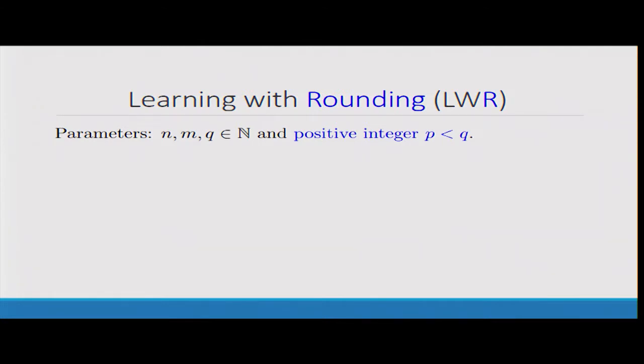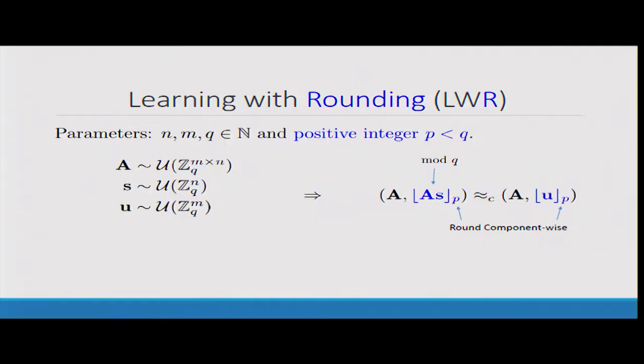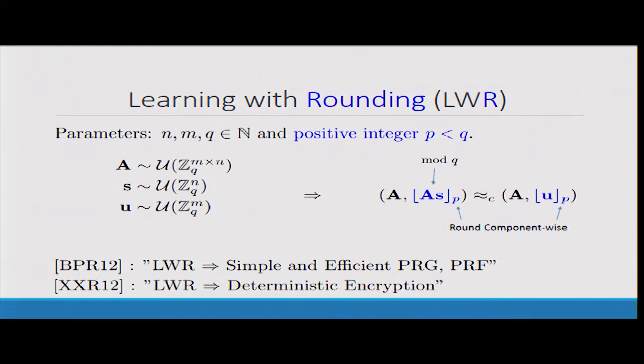Now we can formulate the learning with rounding assumption. It's got the same parameters as learning with errors plus this extra integer P. The challenge is to distinguish between the matrix A together with A times s rounded or the matrix A together with a uniform vector rounded.